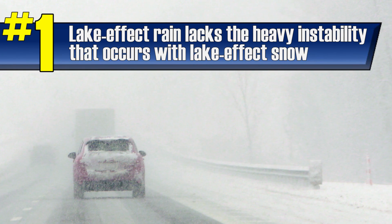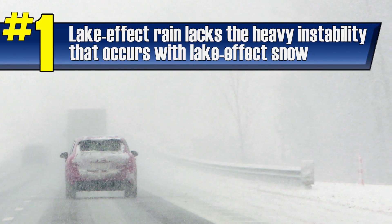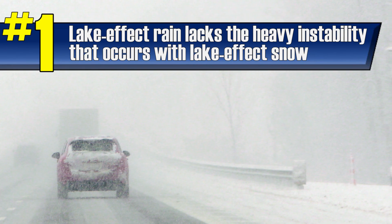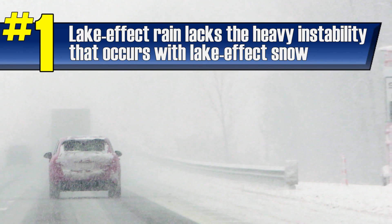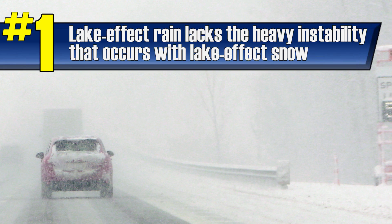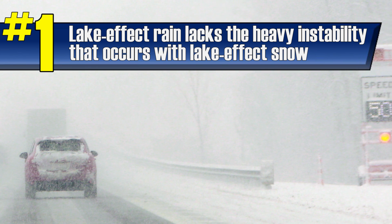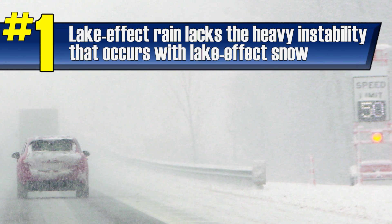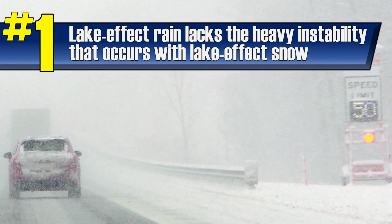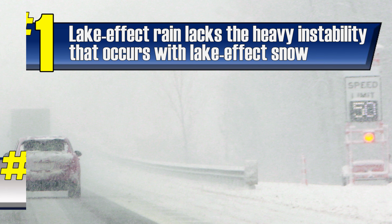First, lake effect snow typically happens when there are extreme amounts of instability in the low levels of the atmosphere, caused by strong fronts or deep low pressure systems. But in lake effect rain events, that instability is absent.